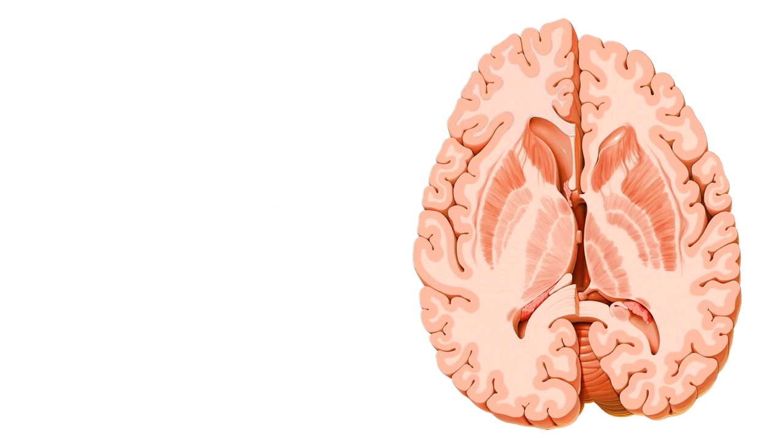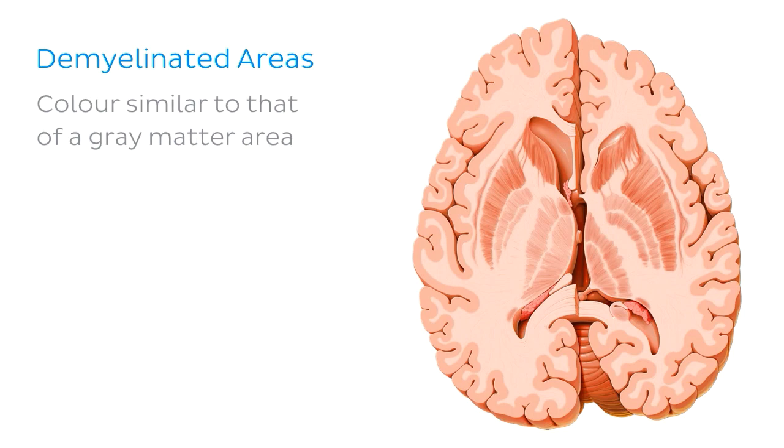Destruction of myelin would result in change of color in a gross specimen, but it's important to note that although the demyelinated area might have a color similar to that of a grey matter area, it would not actually be considered a true grey matter area, because as we've already explained, grey matter areas contain neuronal bodies, while demyelinated areas still contain neuronal axons.